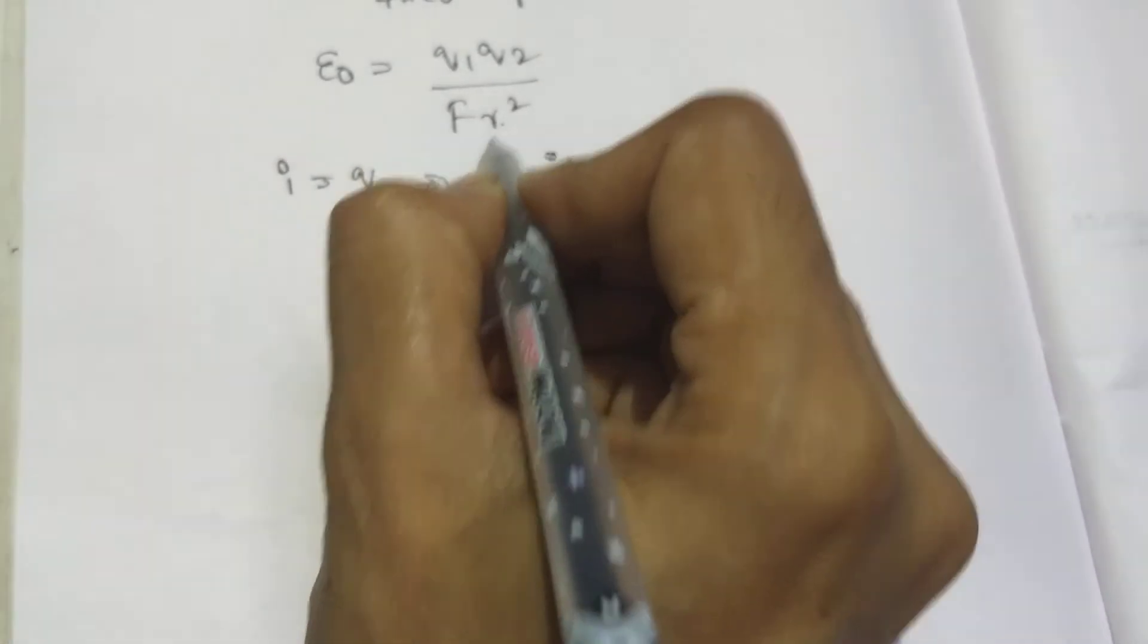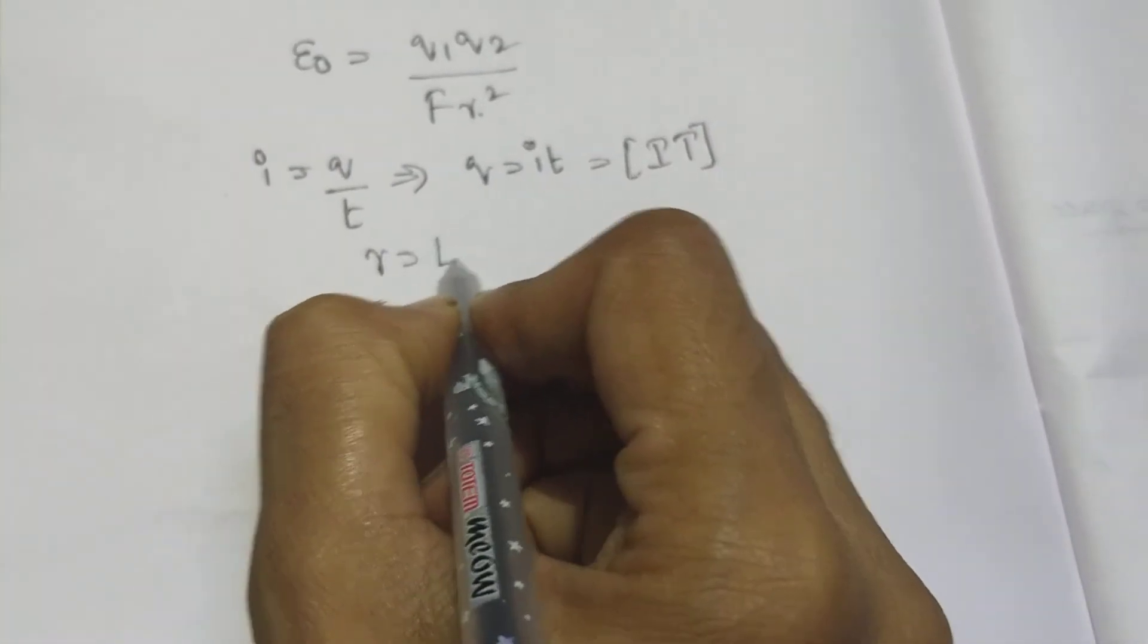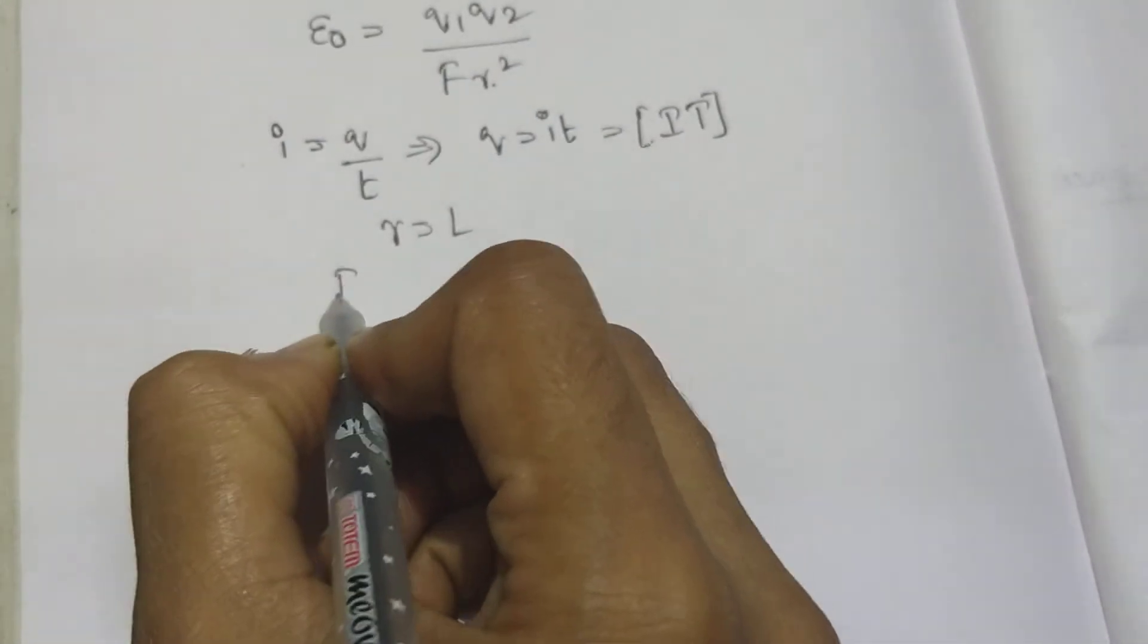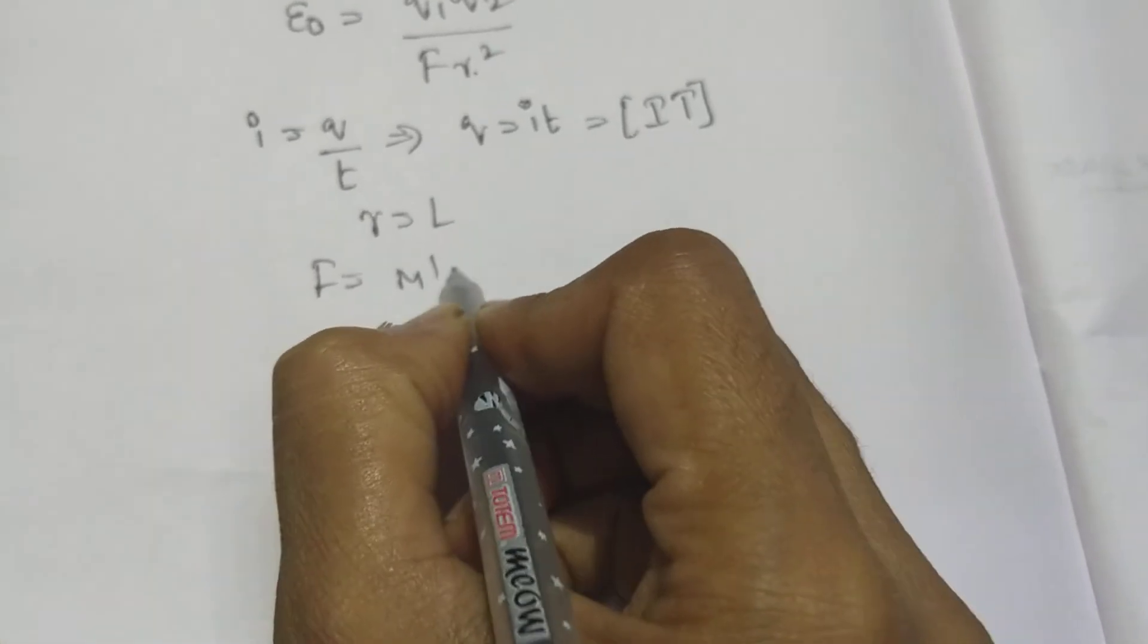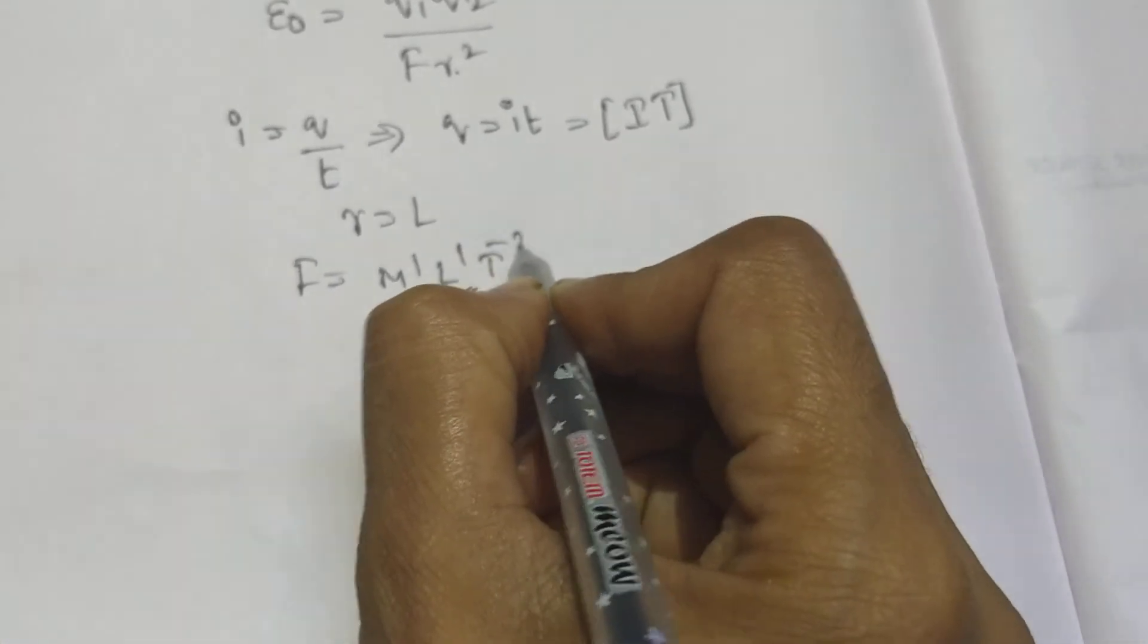R should be represented by L distance. F dimensional formula is M power 1, L power 1, T power minus 2.